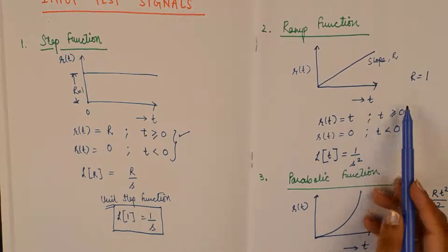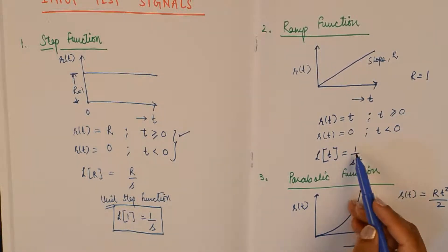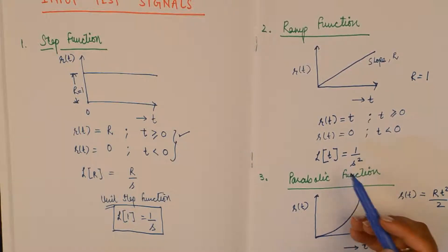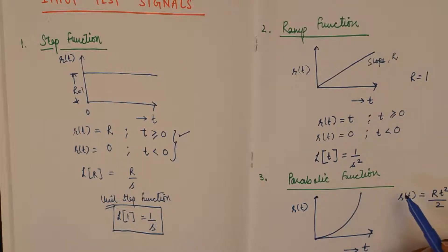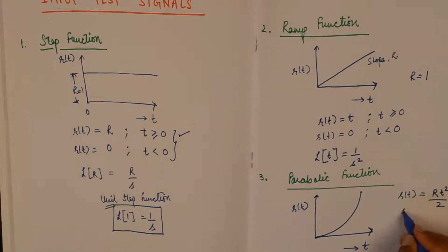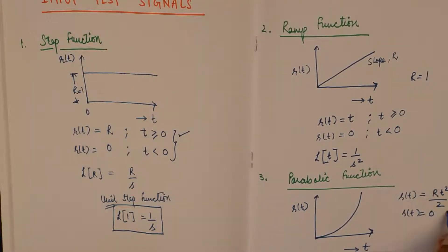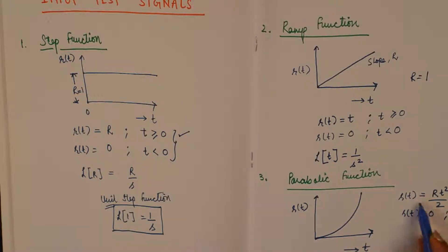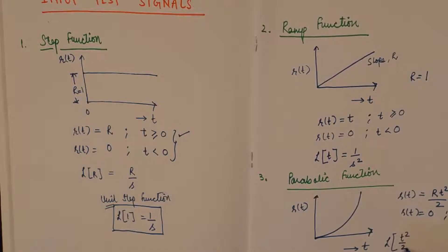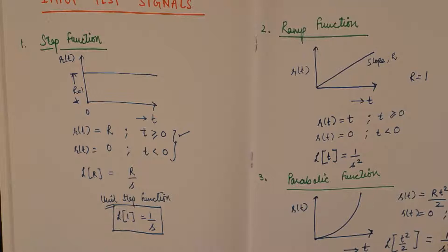R can have any value, but for unit parabolic, unit ramp, or unit step functions, R takes the value of unity. So r(t) equals t²/2 for all values of t greater than or equal to 0, and 0 for t less than 0. Taking the Laplace transform of t²/2 gives 1/s³, which is the Laplace transform of the parabolic function.